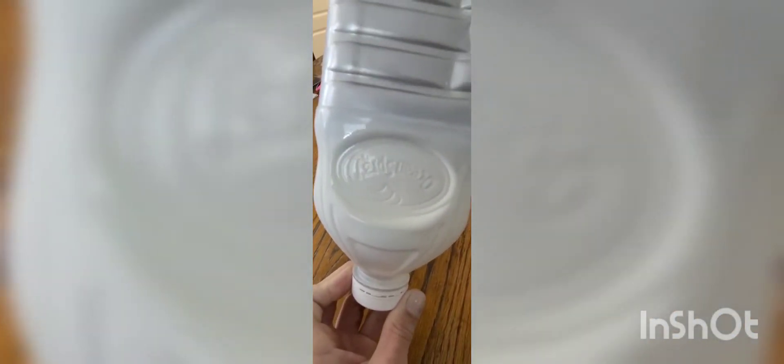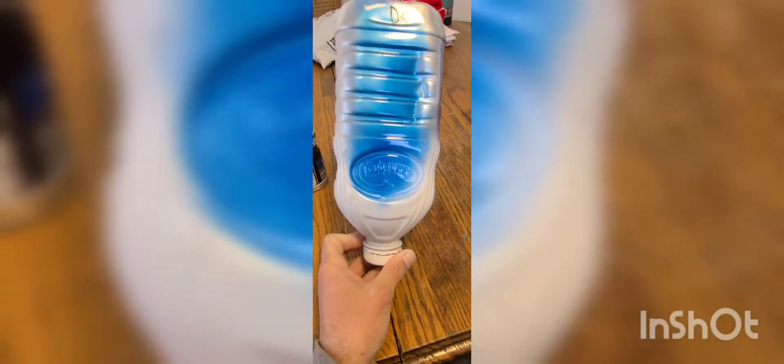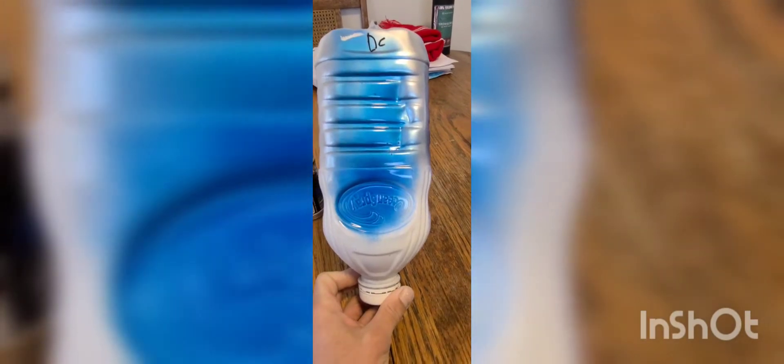So this is the Dupli Color. Notice how it likes to collect to the edges. I almost like the white base coat better, not as sparkly, but the blue is really nice.